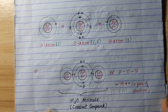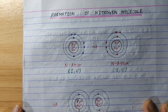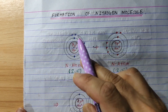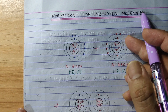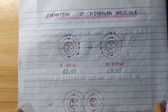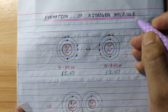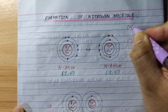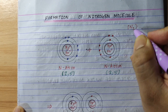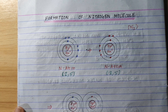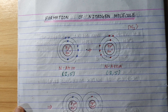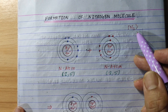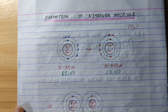I will show you another example: the nitrogen molecule formation. What is the formation of a nitrogen molecule? Nitrogen is a diatomic gas, N2. The nitrogen atom combines with another nitrogen atom. This is a homonuclear molecule — it is made of the same atom.